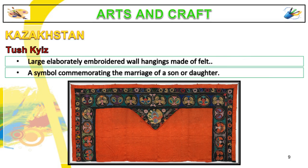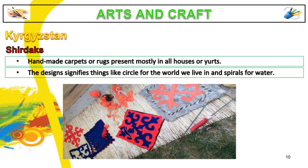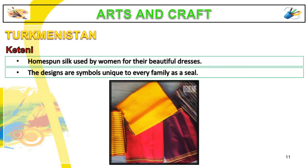In Kazakhstan, they have tush kiaz — large, elaborately embroidered wall hangings made of felt. This is a symbol commemorating the marriage of a son or daughter. In Kyrgyzstan, they have shurdaks, handmade carpets or rugs present mostly in all houses or yurts. The design signifies things like a circle for the world we live in and spirals for water. In Turkmenistan, they have kitini, homespun silk used by women for their beautiful dresses. The designs are symbols unique to every family as a seal.